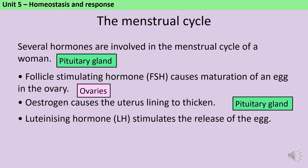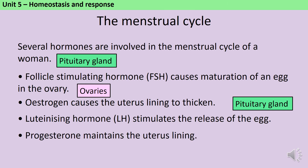The final hormone is called progesterone, and progesterone is responsible for maintaining the lining of the uterus. If a fertilised egg does implant in the wall of the uterus, then the body will carry on producing progesterone for the length of the pregnancy, so that the uterus lining remains intact. But if no fertilised egg implants, then progesterone levels will drop and menstruation will occur. Progesterone is also produced in the ovaries, so you've got two hormones produced in the pituitary gland and two produced in the ovaries to remember.